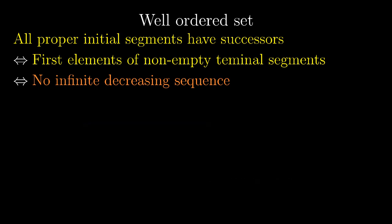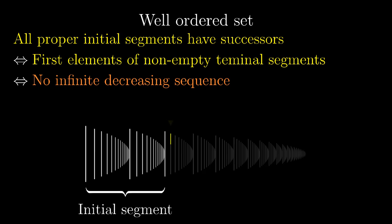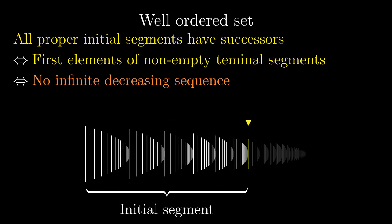So we have several ways how to determine whether a set is well-ordered, that is we can run the transfinite recursion on it. One way is to investigate all the proper initial segments and check whether they have their successors.